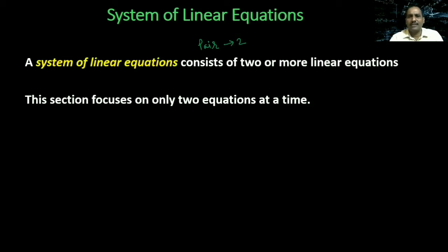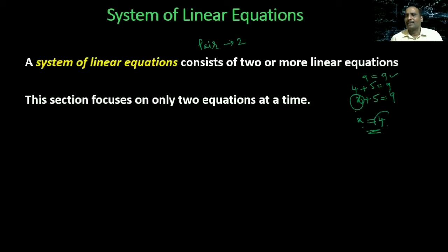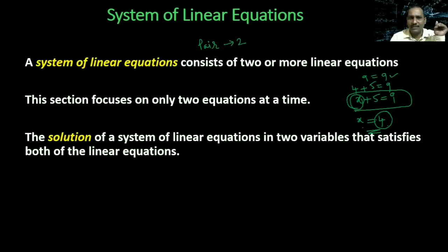When you have equations, you should have a solution. What is the solution? Suppose you have x plus 5 equal to 9 — x is equal to 4. When you substitute x equal to 4, it satisfies: 9 equal to 9. This particular value 4 is called the solution of the equation. A value for which it satisfies the given equation is called the solution. If you have two equations, the solution should satisfy both equations — only then is it called the solution of the system.